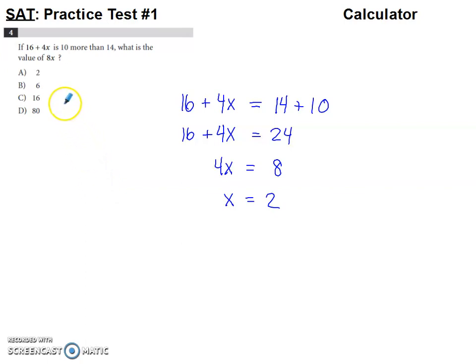So in problem number four, they say that 16 plus 4x is... if something is something else in math, it's equal to it. So 16 plus 4x is equal to 10 more than 14.